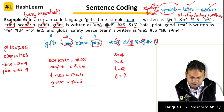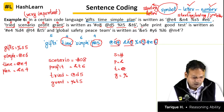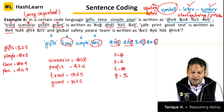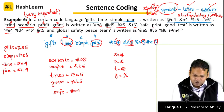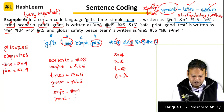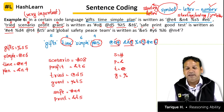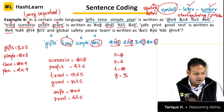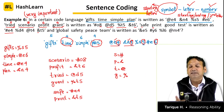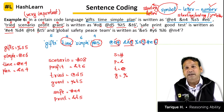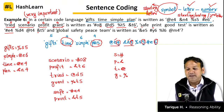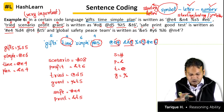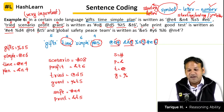Once you understand the pattern, it becomes simple. 'Safe' starts with S so it gets hash, ends in E, has 4 letters — code is #E4. 'Print' starts with P so it gets ampersand — &T5. The three elements of this code type are: symbol represents the starting letter of the word, the letter represents the ending letter of the word, and the number represents the total number of letters. Sometimes the letter can represent the starting letter, ending letter, second letter, or first vowel — different questions use different positions.